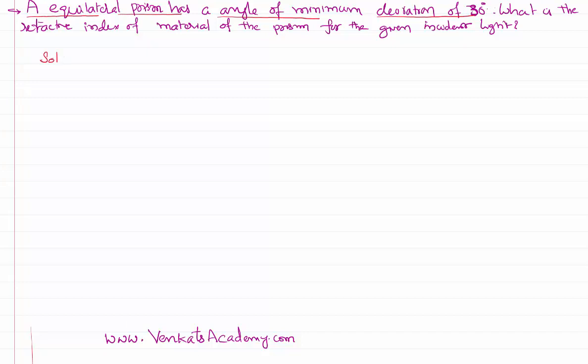Let us consider the data given in the problem. Prism is an equilateral prism means the angle of the prism is 60 degrees. It is further given that minimum deviation of that prism for the light that is entering is 30 degrees.